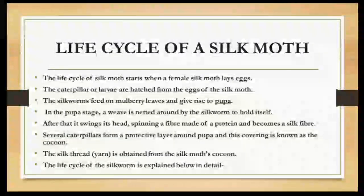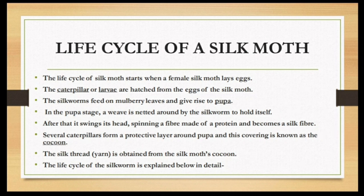This is a very important slide for exam purposes: the life cycle of a silk moth. The life cycle starts when a female silk moth lays eggs. The caterpillar or larvae are hatched from the eggs of the silk moth. The silkworms feed on mulberry leaves and give rise to pupa.